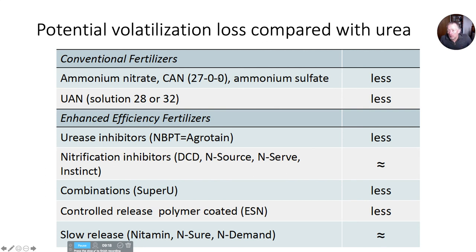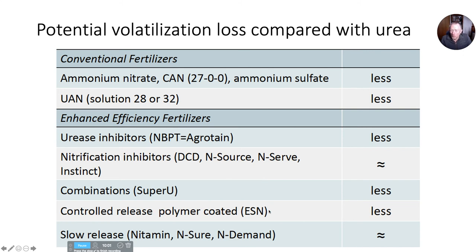Comparing these different products for potential volatilization loss: urea is really the worst for volatilization potential. Ammonium sulfate has lower potential volatilization. UAN has lower volatilization potential. If you use Agrotain or the NBPT urease inhibitor — I'll talk about what that means — that reduces volatilization. Controlled release fertilizers like polymer-coated fertilizers are meant to slow down the release and reduce volatilization and losses.